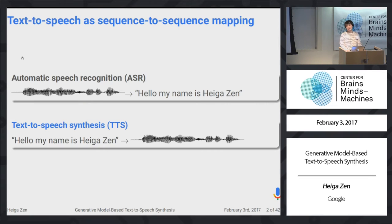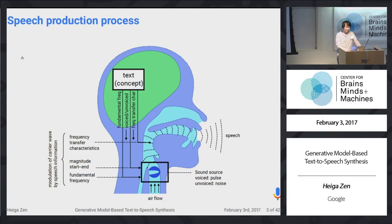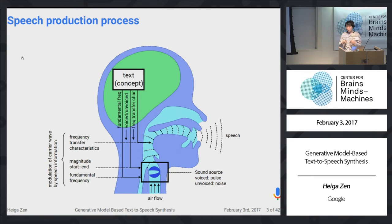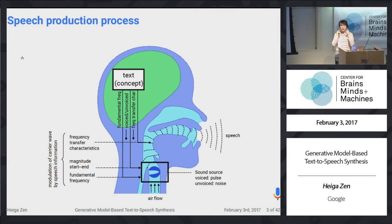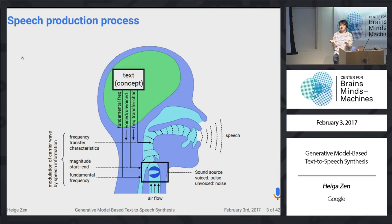How do human beings solve this problem? First we have text or a concept to be synthesized, then it is translated into the movement of our muscles. Using the airflow from the lungs, we first create vocal source excitation signals using the vocal cord or turbulent noise. Then their frequency characteristics are modulated by the vocal transfer function controlled by articulators. Finally, we emit a speech waveform from our mouth. The aim of text-to-speech synthesis is to mimic this process by a computer.